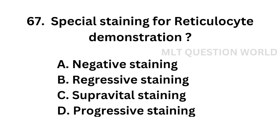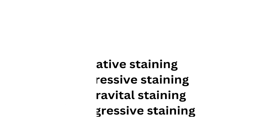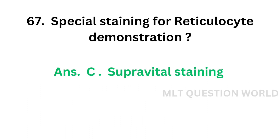Question number 67: Special staining for reticulocyte demonstration — Option A: Negative staining, Option B: Regressive staining, Option C: Supravital staining, Option D: Progressive staining. The correct answer is Option C, Supravital staining. Supravital staining is used for demonstration of reticulocytes.